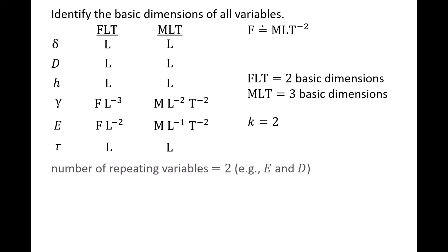The number of repeating variables is equal to the number of reference dimensions. It's 2. One example of a valid set of repeating variables is the modulus of elasticity E and tank diameter D.